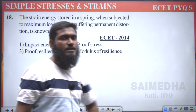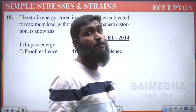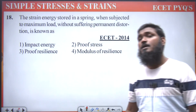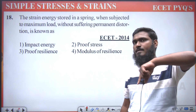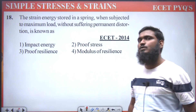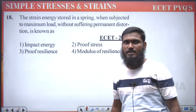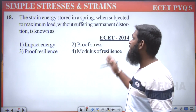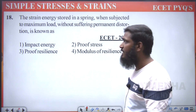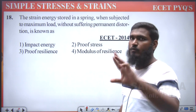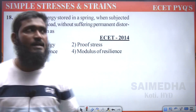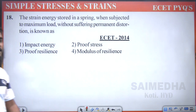What we are calling is resilience. And what is proof resilience? Proof resilience means the maximum energy stored — that we call proof resilience. Modulus of resilience means proof resilience per unit volume. If you are taking per volume, then we are calling it as modulus of resilience.